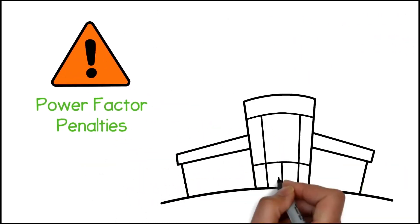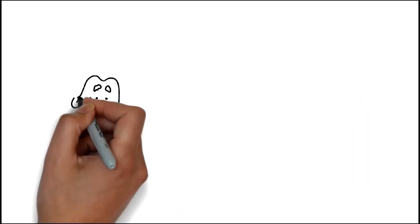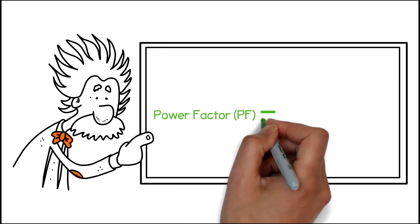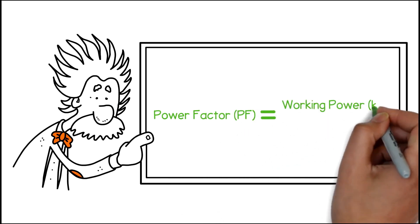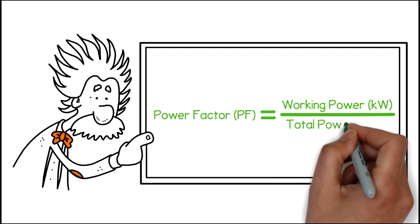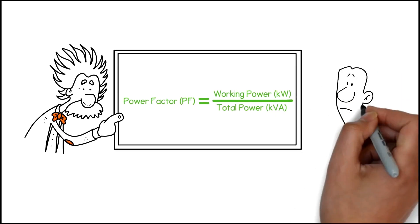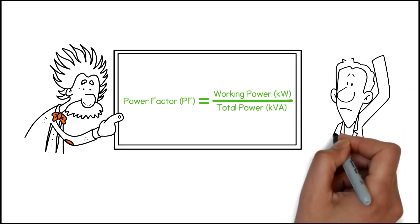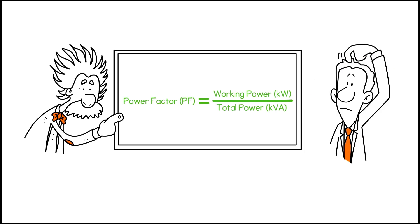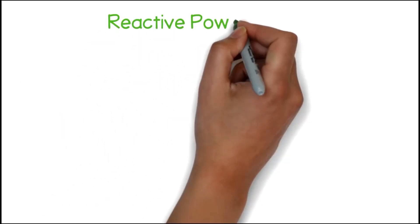Power Factor is a measurement of how effectively your premises uses its electricity. Power Factor is a ratio of the power used — called your working power or kilowatts — divided by the power supplied to you, called total power or KVA. The difference between working power and total power is called reactive power or KVAR.